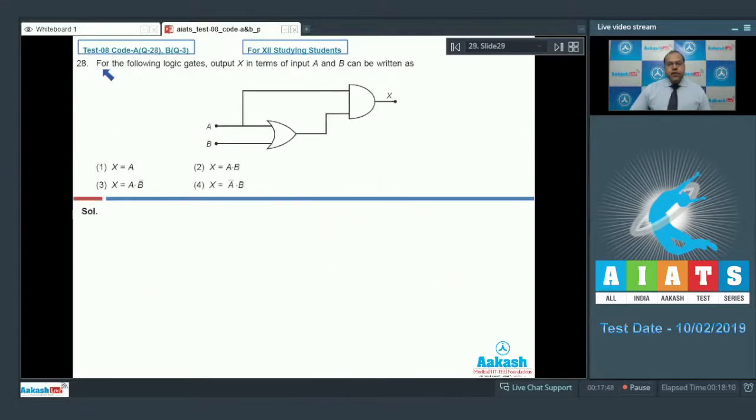In question number 28, for the following logic gates, output X in terms of input A and B can be written as. So this is the input A and B for this OR gate. So the output would be A plus B and for the AND gate, the input would be A and A plus B. So the output X can be written as A dot A plus B.